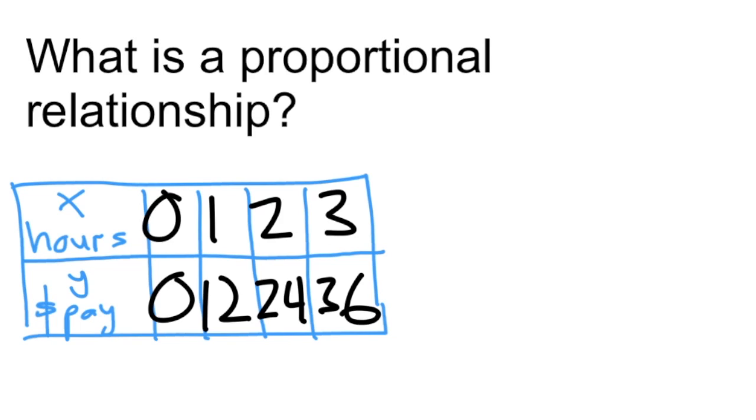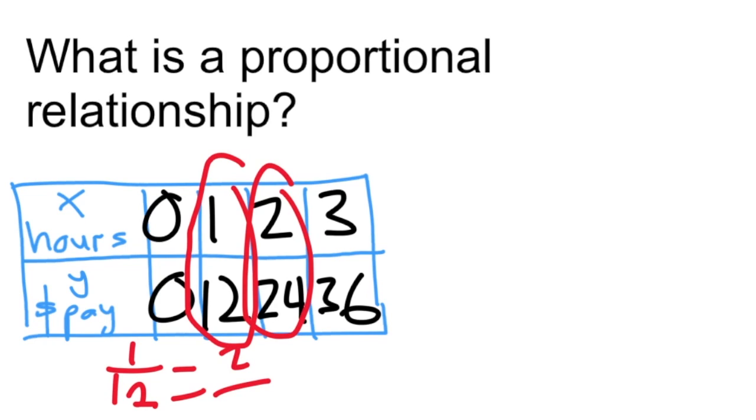Here we have a relationship between the hours you work and the amount of pay you get. If I take 1 hour is $12 and write that as a ratio, it is the same as 2 hours you make $24.